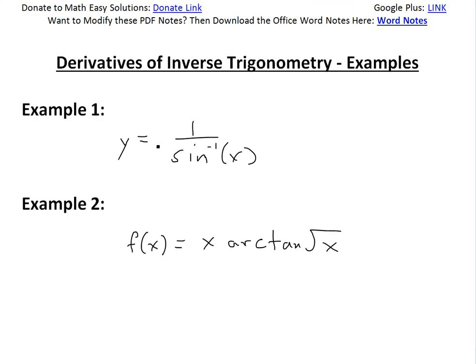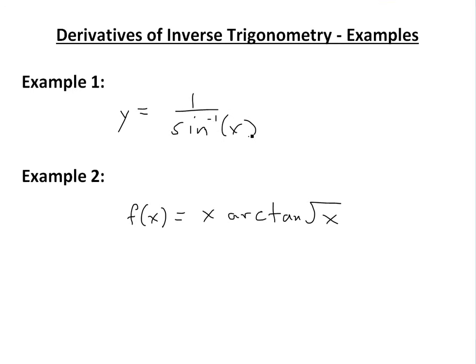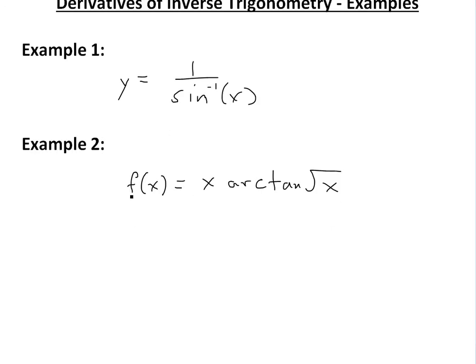So example one states: find derivative of y equals 1 divided by inverse sine of x. Example two is: find derivative of f(x) if f(x) equals x times arctan of square root of x. Arctan is the same thing as inverse tan of x.